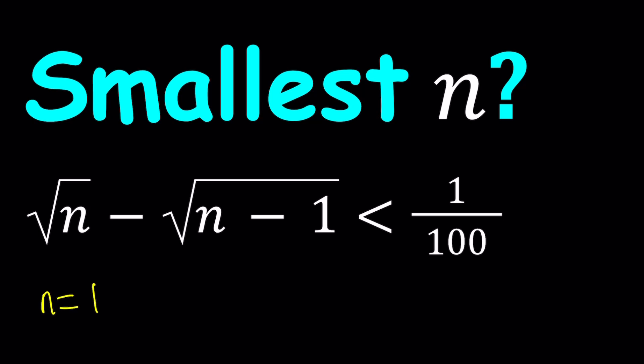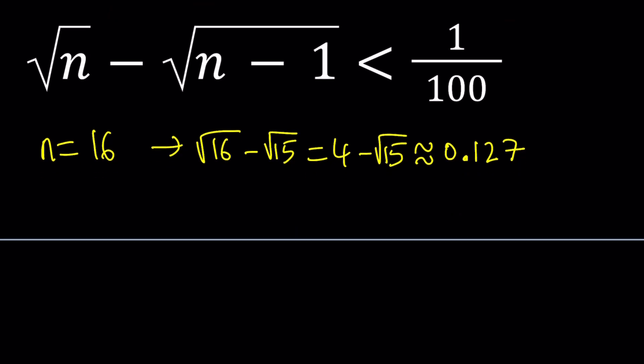So suppose n is equal to 16. Now we're going to get square root of 16 minus the square root of 15, which is equal to 4 minus the square root of 15. And that is going to be approximately 0.127, so kind of close to 1 eighth. Well, that is bigger than 1 over 100, which is 0.01. That's actually much, much bigger.